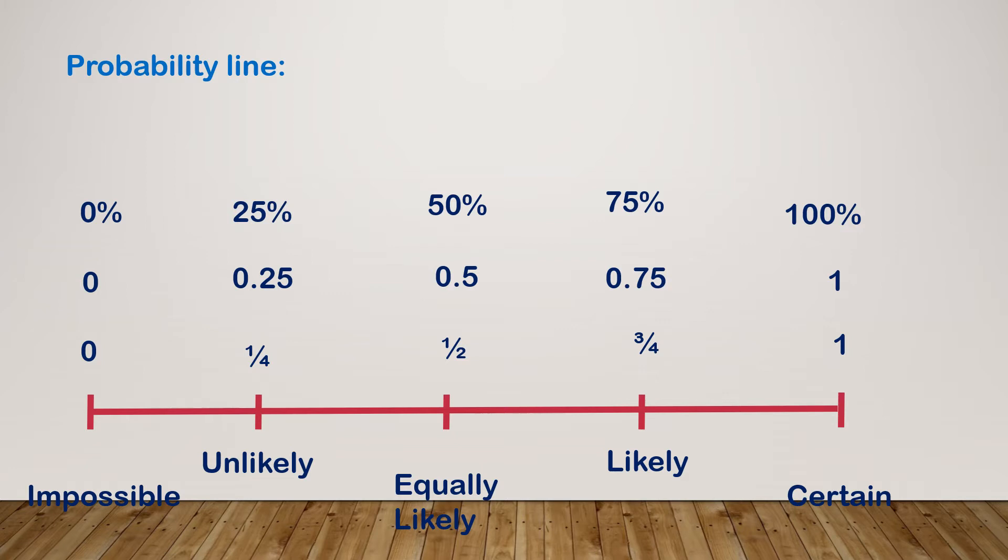Now even chance or equally likely is like heads or tails on a coin. There's a 50-50 chance. Unlikely is anything that's less than a 50% chance but isn't impossible. And likely is anything between 51% and 99% chance. Now probability can be expressed in words, fractions, decimals, or percentages.